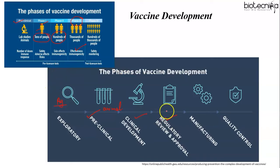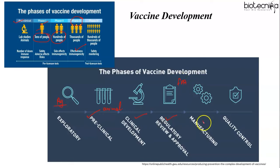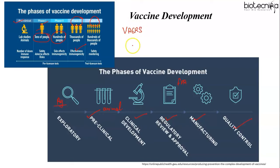Then comes regulatory review and approval. If a vaccine passes through all three phases of clinical development, the vaccine developer submits a Biologics License Application (BLA) to the FDA. Then comes manufacturing, where major drug manufacturers provide the infrastructure, personnel, and equipment necessary to create mass quantities of vaccine. Finally, quality control is maintained through phase four trials — optional studies conducted following the release of a vaccine — along with the Vaccine Adverse Event Reporting System (VAERS) and Vaccine Safety Datalink, which monitor the performance, safety, and effectiveness of an approved vaccine.